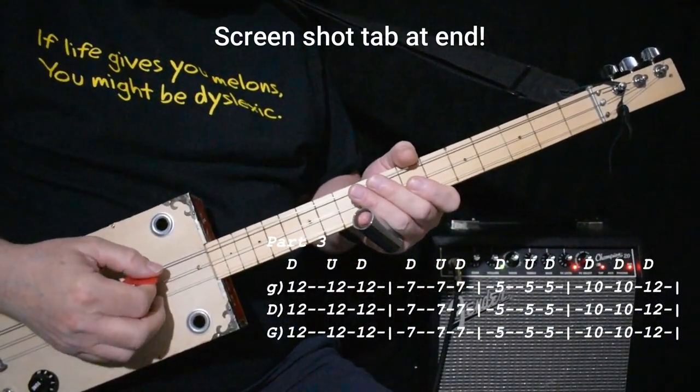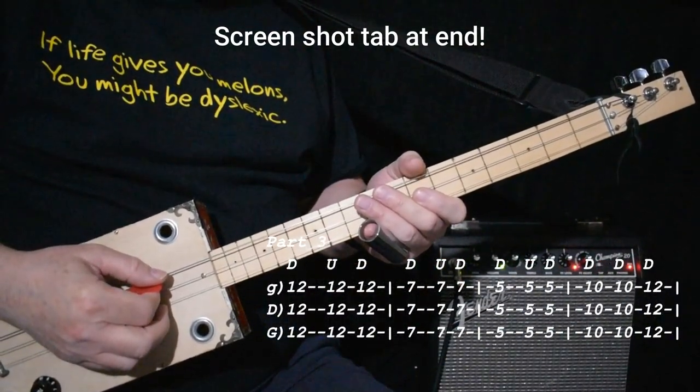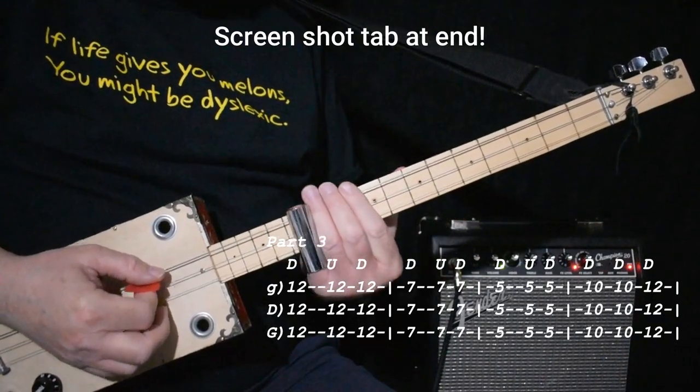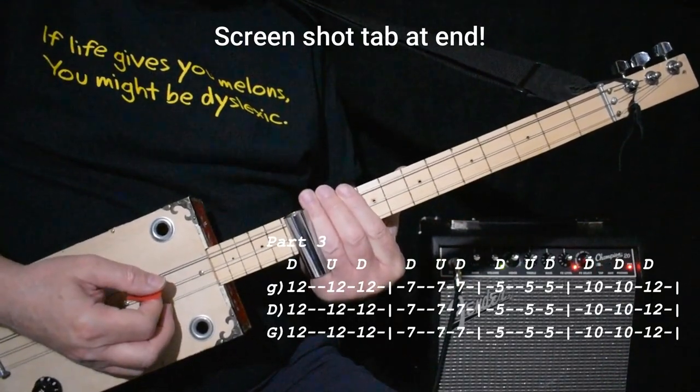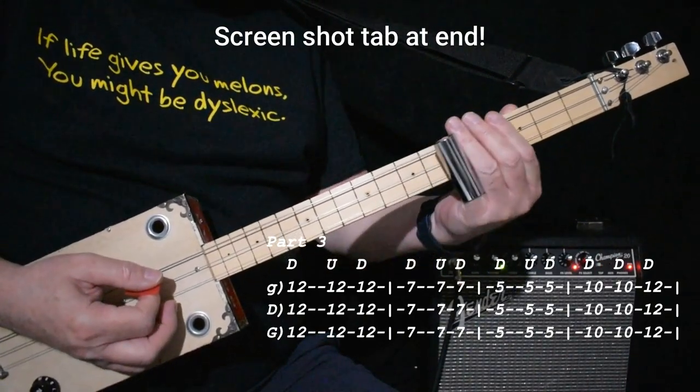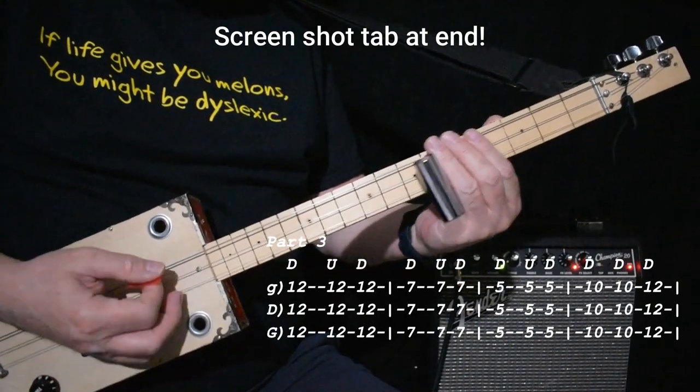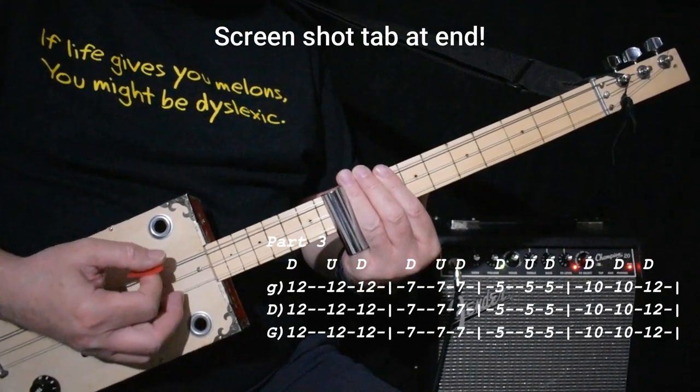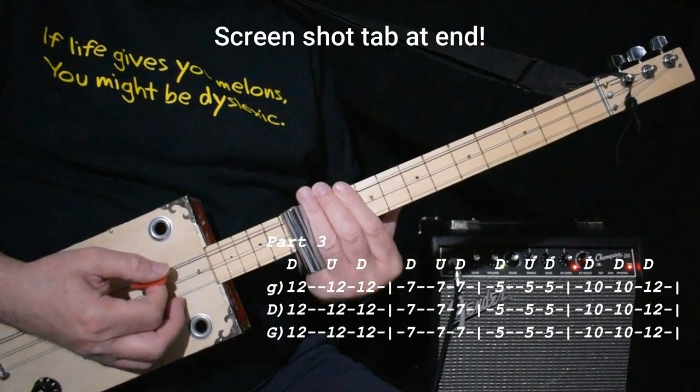Part three is very straightforward. You go up to fret twelve and you go down, up, down. Fret seven, same thing. Fret five, same thing. Down twice on ten. And then down on twelve.